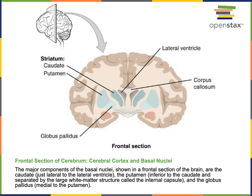While the cerebral cortex is the most superficial layer of gray matter in the cerebrum, deep to the cerebral cortex is the white matter of the cerebrum. The corpus callosum is a large tract of white matter that connects the left cerebral hemisphere and the right cerebral hemisphere. Deep to the white matter of the cerebrum are the basal nuclei. The striatum and globus pallidus are basal nuclei that are involved in processing commands and regulating motivation.